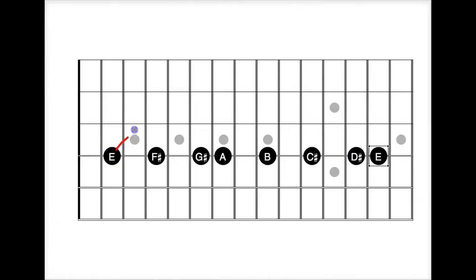If we want to, we could even double check ourselves: whole, whole, half, whole, whole, whole, half. And we see that a whole step, remember, is two frets distance on the guitar. Half step is one fret distance on the guitar. And we see we've got the right formula here.